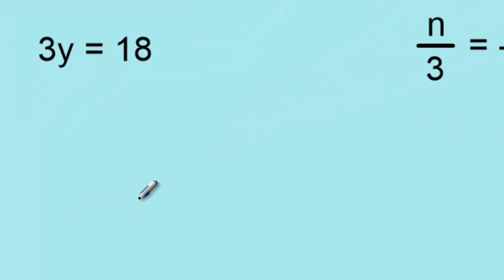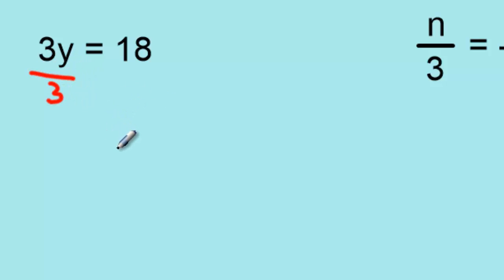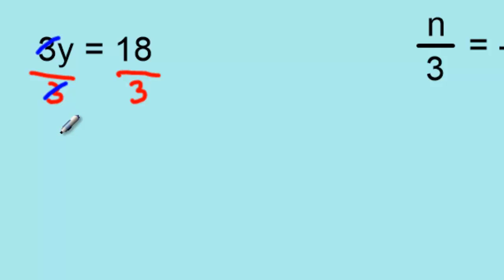For 3y equals 18, in order to isolate for y, we want to get rid of the 3 that's in front of the y. Currently it's multiplying, so in order to get rid of it, we divide by 3. Remembering that we need to balance our equations so that the left side is always in balance with the right side, we must do the same step on both sides. So we divide by 3 on the right side as well. This cancels the 3's on the left side so we're only left with y, and 18 divided by 3 equals 6.